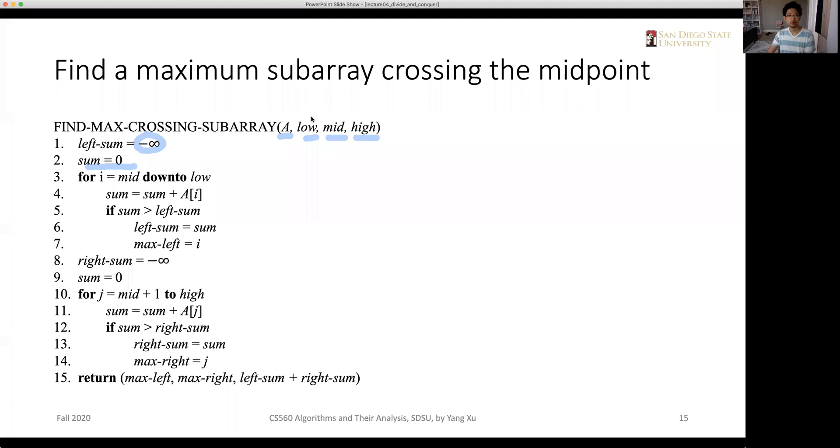So basically we have two for loops. A first for loop right here, second for loop right here. And we are returning three values: the max left, max right, and the summation of left sum plus right sum.